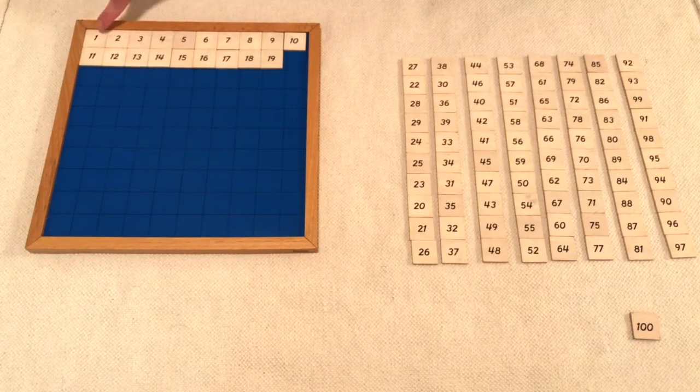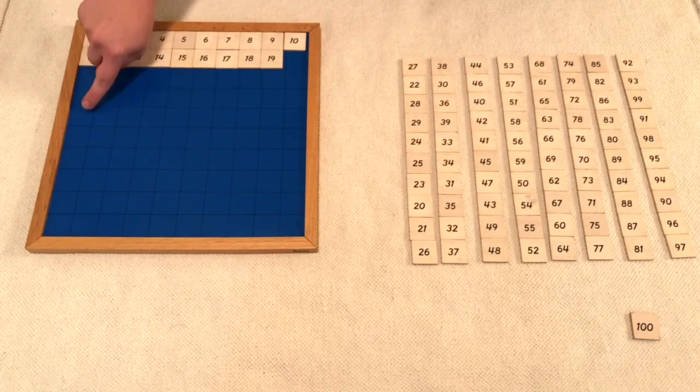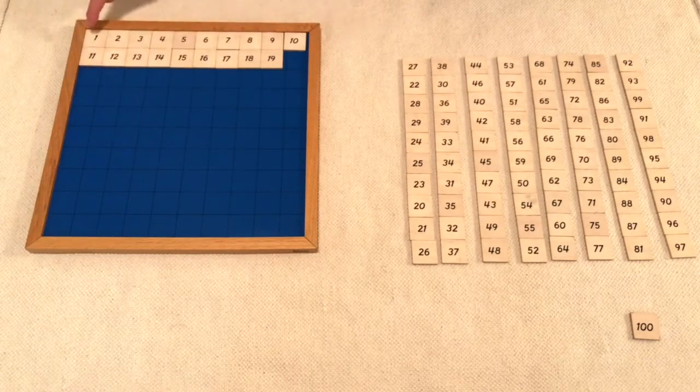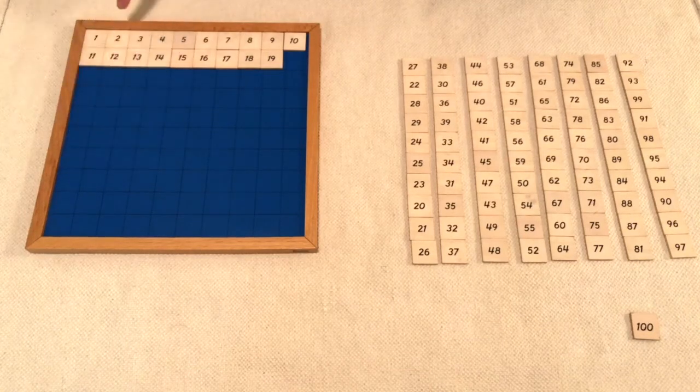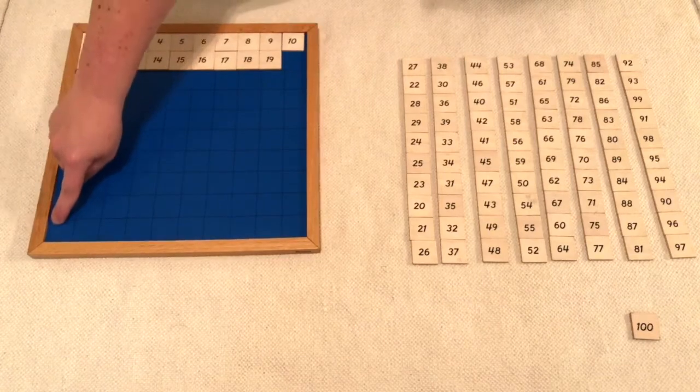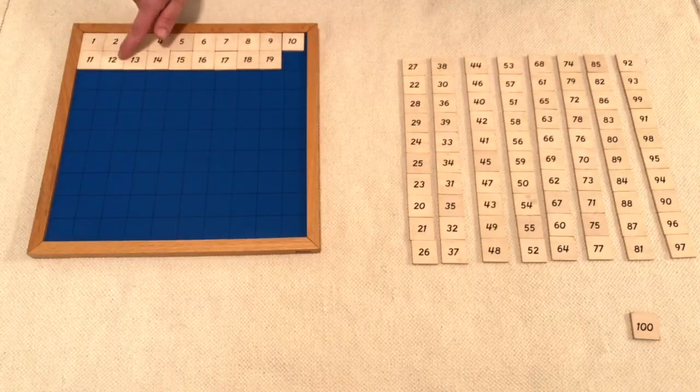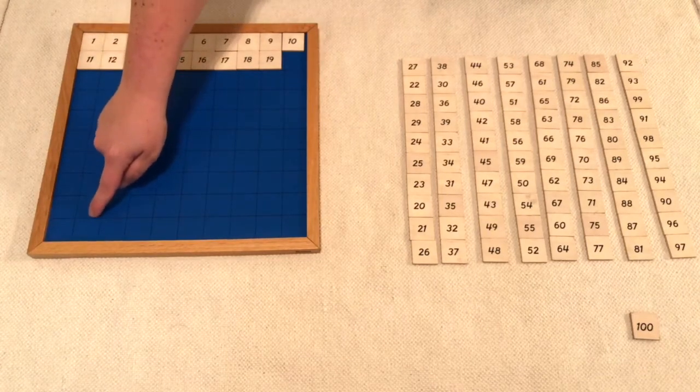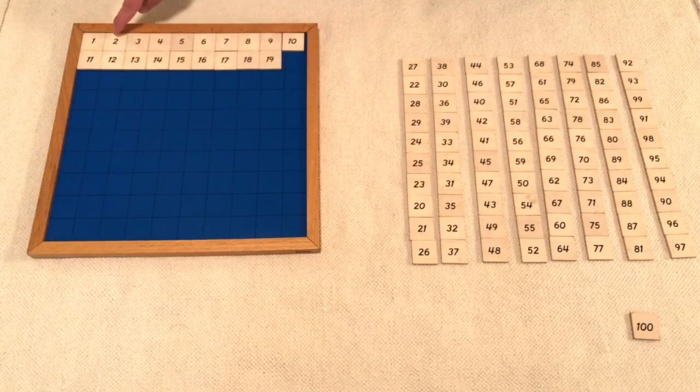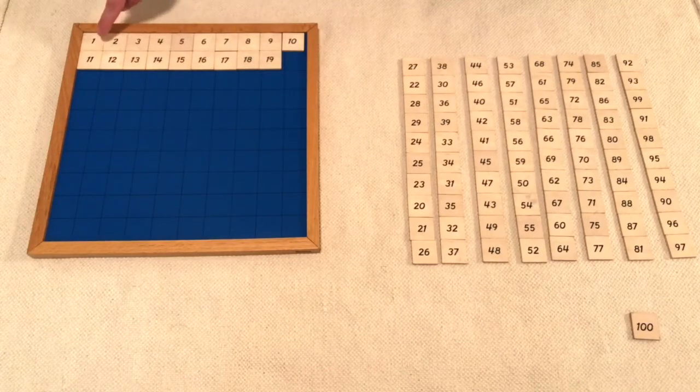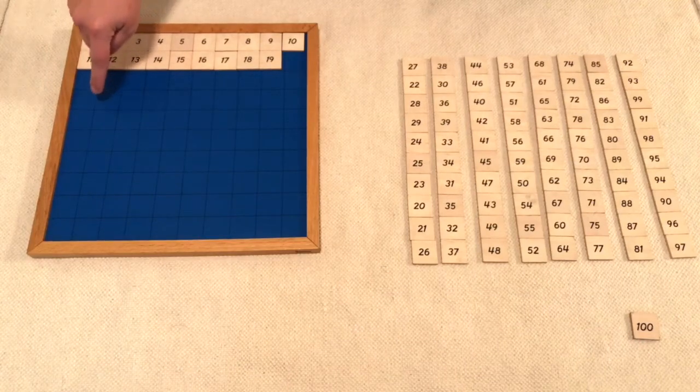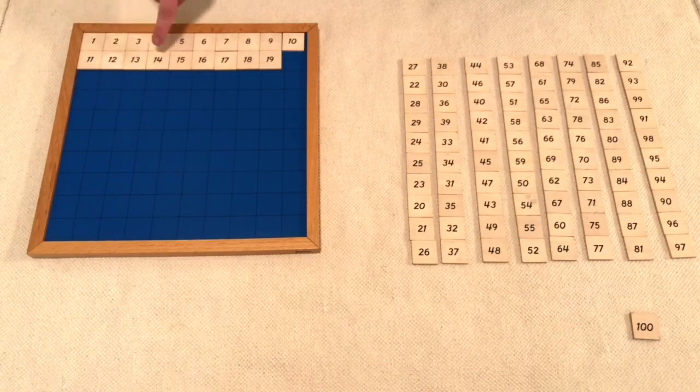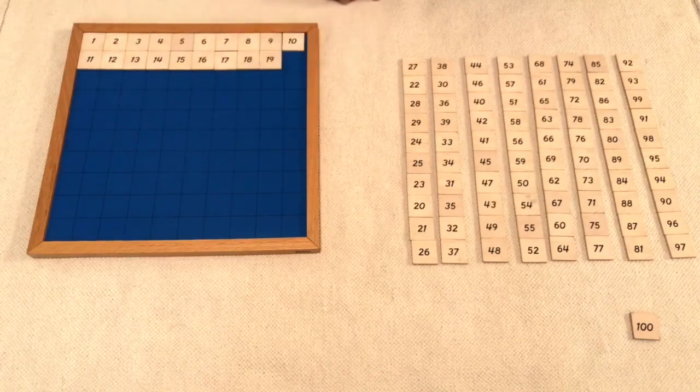The numbers also are going to make a pattern. All of the ones are going to be in the columns. For this row, all of the twos, so we'll see this is 2, 12, then we'll have 22, 32, and the pattern just keeps on going.